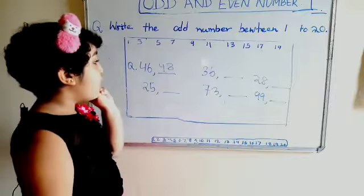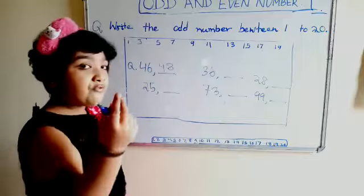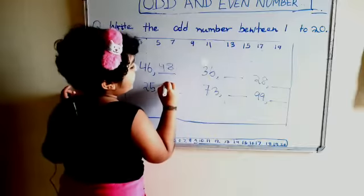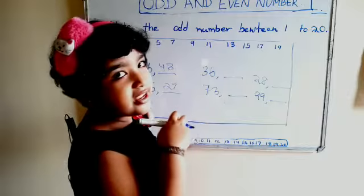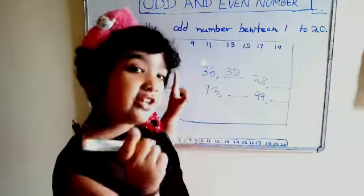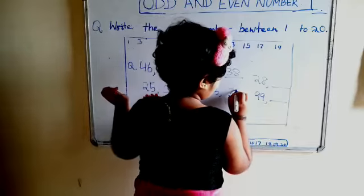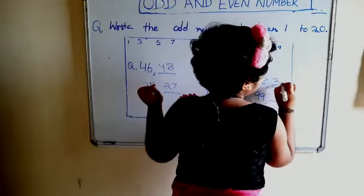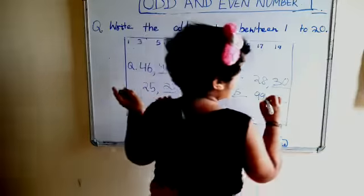वैसे ही 25 odd number है, उसके next odd number लिखेंगे — 27. 36 का next even number? 38. 73 का next odd number? 75. 28 का? 30. 99 का? 101.